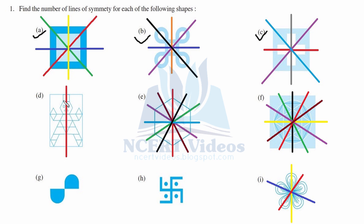Part D: this toy has only one line of symmetry, which is vertical — its eyes and mouth are separated by it. Part E: this is a hexagon. A regular hexagon has six lines of symmetry — one, two, three, four, five, six. If you place a mirror on each line of symmetry, you will be able to get the other side.